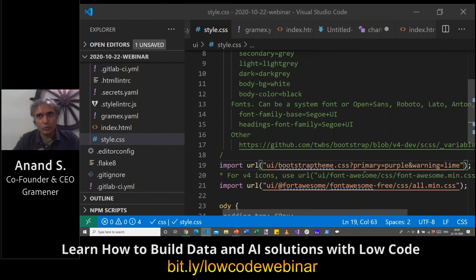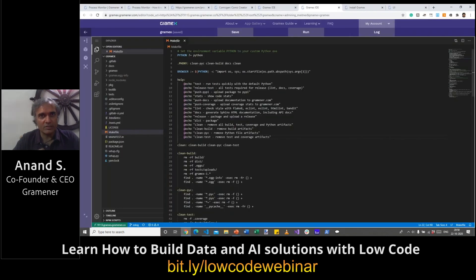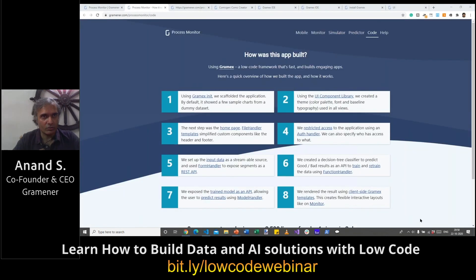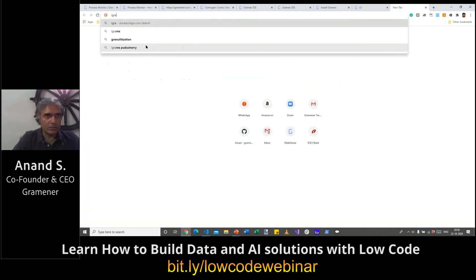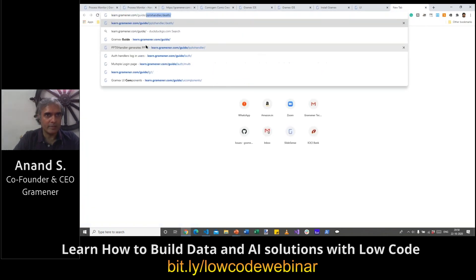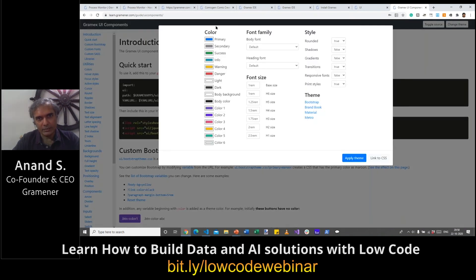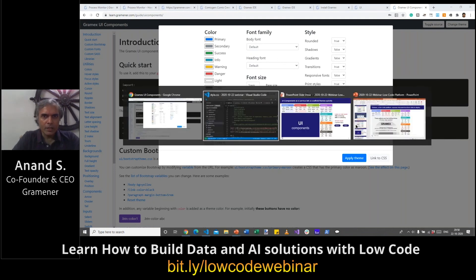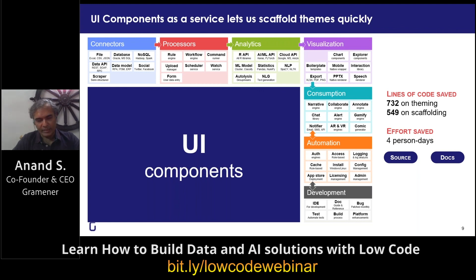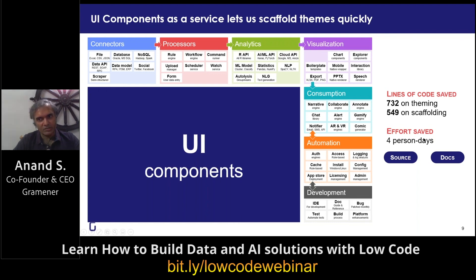All you need is to pick what you want through a UI such as what you saw on the GramX guide, where you can pick and choose the theme and color combinations and get a link that you can directly enter. What this did for us was significant: in terms of lines of code, we ran it in parallel — over 1,200 lines were saved, and in terms of effort, that was a four-person day save.